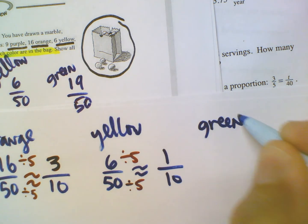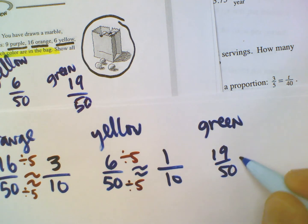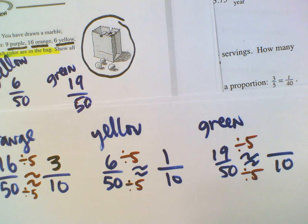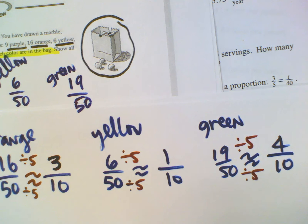So green is 19 out of 50. So approximately what is that over 10? And once again divide by 5. What - 19 divided by 5 is approximately how many times is 5 going into 19? Well it's close to 20, isn't it? 19 is close to 20, so 20 divided by 5 is 4.